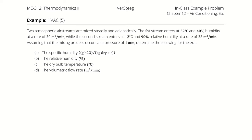Two atmospheric airstreams are mixed steadily and adiabatically. The first stream enters at 32 degrees Celsius and 40% relative humidity at a rate of 20 cubic meters per minute, and the second stream enters at 12 degrees Celsius and 90% relative humidity at a rate of 25 cubic meters per minute. Assuming the mixing process occurs at a pressure of one atmosphere, determine the specific humidity in grams per kilogram, the relative humidity, the dry bulb temperature, and the volumetric flow rate at the exit.